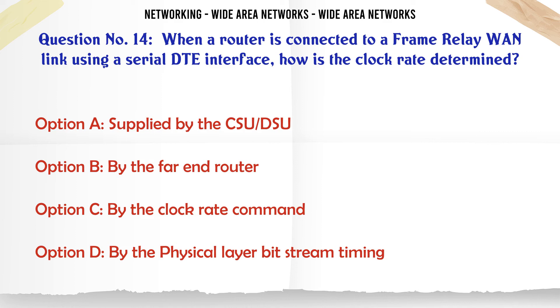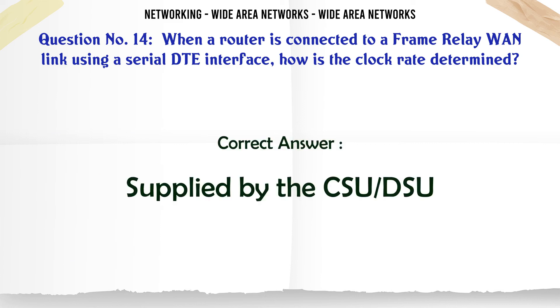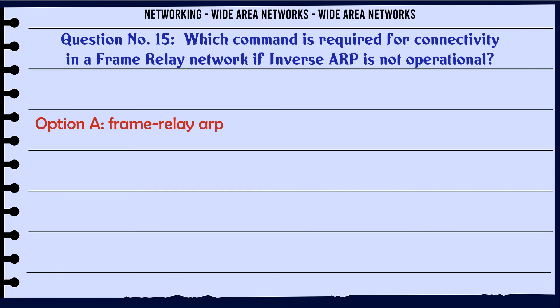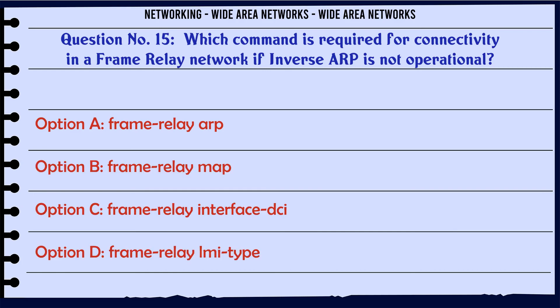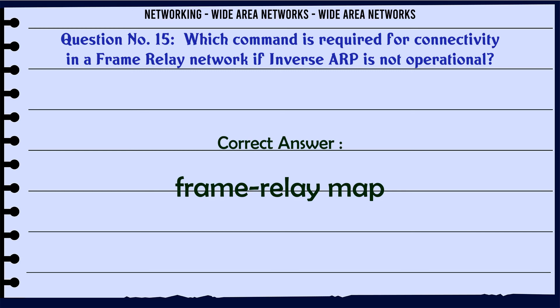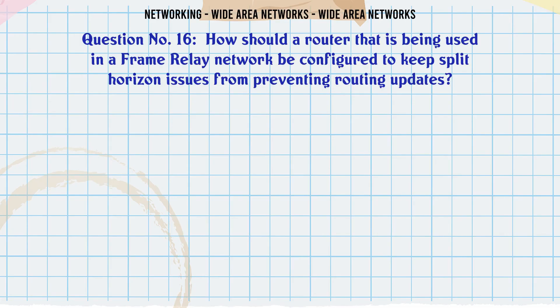When a router is connected to a frame relay WAN link using a serial DTE interface, how is the clock rate determined? A. Supplied by the CSU/DSU. B. By the far end router. C. By the clock rate command. D. By the physical layer bit stream timing. The correct answer is A: Supplied by the CSU/DSU.